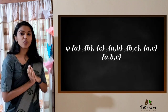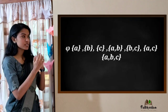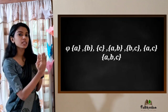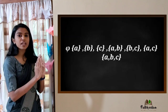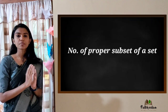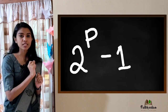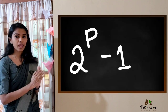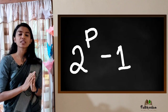So what is a proper subset? A proper subset is any subset that is not the same as the original set itself. The number of proper subsets of a set is 2^n minus 1, where n is the number of elements. So the number of proper subsets = 2^n − 1.